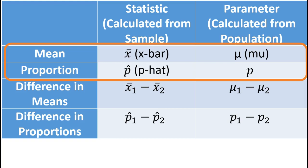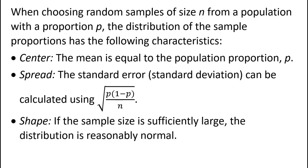Here is the central limit theorem for the single proportion and the single mean. For each scenario, we are describing the properties of the sampling distribution. The central limit theorem for a single proportion: when choosing random samples of size n from a population with proportion p, the distribution of the sample proportion has the following characteristics. Center: the mean is equal to the population proportion p. Spread: the standard error is calculated using the formula square root of p times (1 minus p) divided by n. Shape: if the sample size is sufficiently large, the distribution is reasonably normal. A normal distribution is a good approximation as long as n times p is greater than or equal to 15 and n times (1 minus p) is greater than or equal to 15, which is the same as having an expected count of at least 15 in each category.